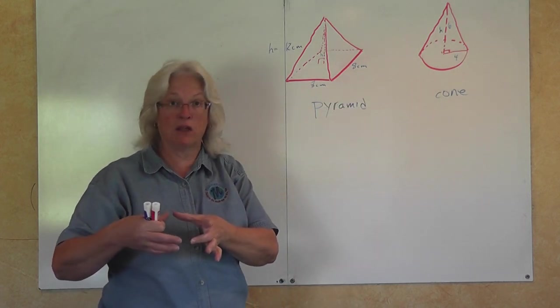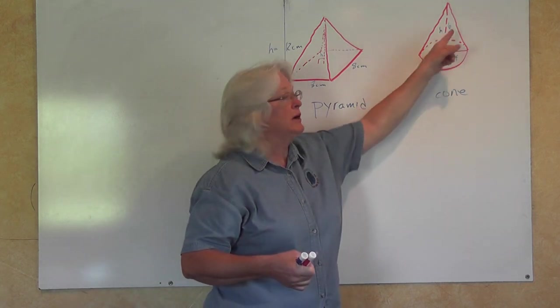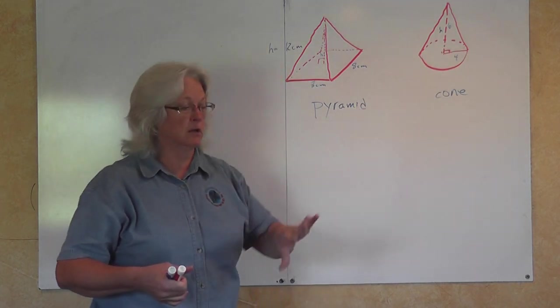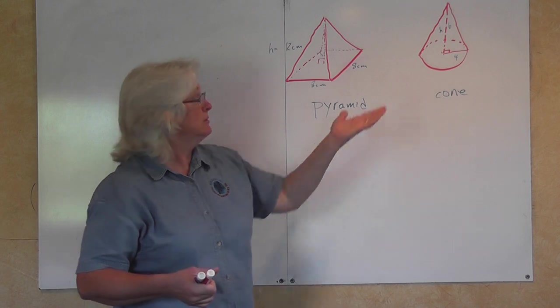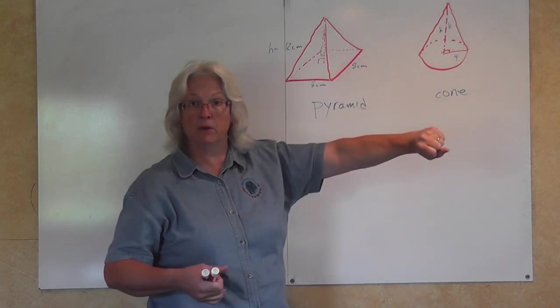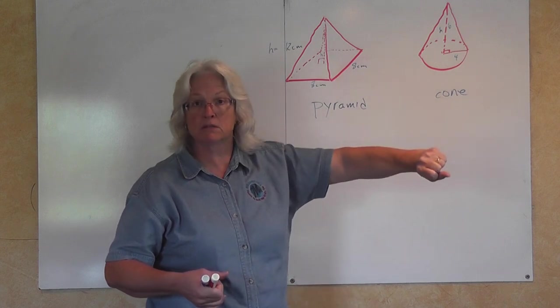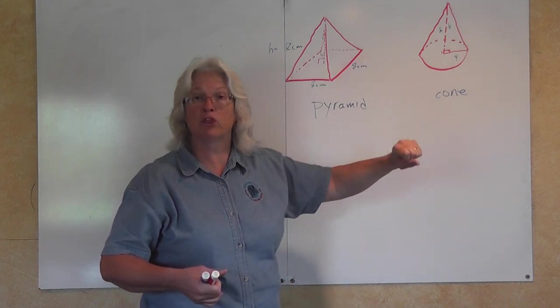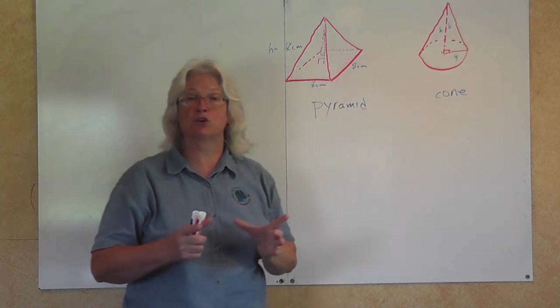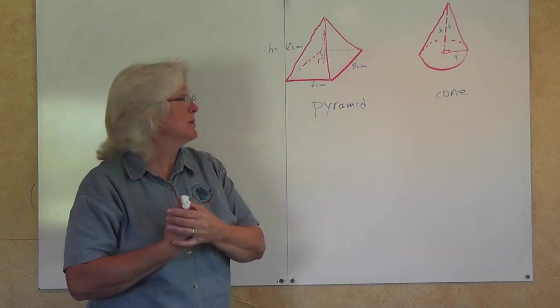You fill up that cone right here with rice, dump it into the cylinder once, fill it up twice, fill it up and dump it a third time, and then finally your cylinder would be filled up.